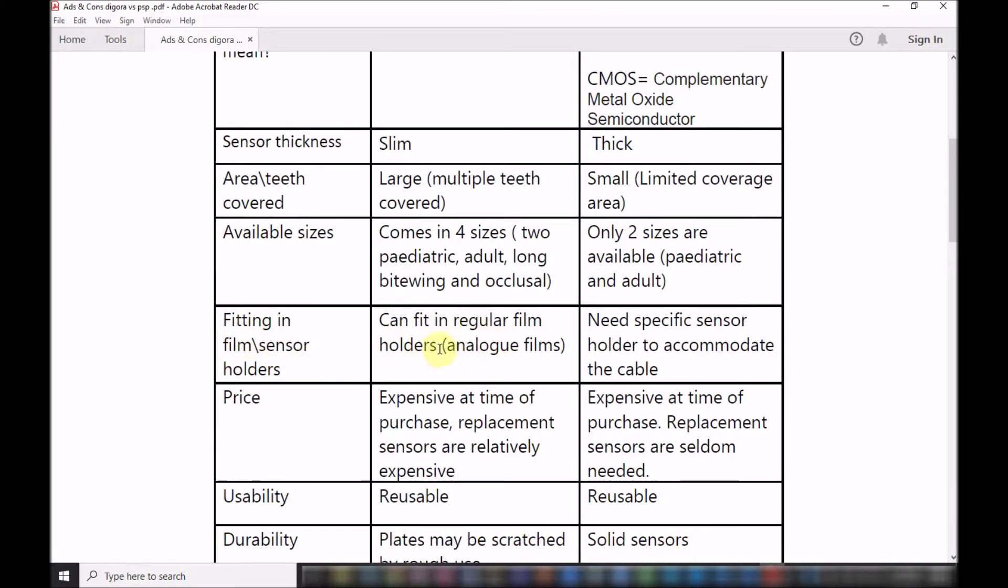The indirect sensors can fit in regular film holders, the same as the older analog films, because they are the same thickness. However, the direct type needs their specific type of holders to accommodate for the different sizes, with a clip or a jaw to hold the sensor in place. You cannot fit it or slide it in a small slit. If you're going to use the parallel technique, you need to purchase special sensor holders that are dedicated for this type of sensors. For the indirect type, you can use the analog film holders if you have any remaining from your older version.